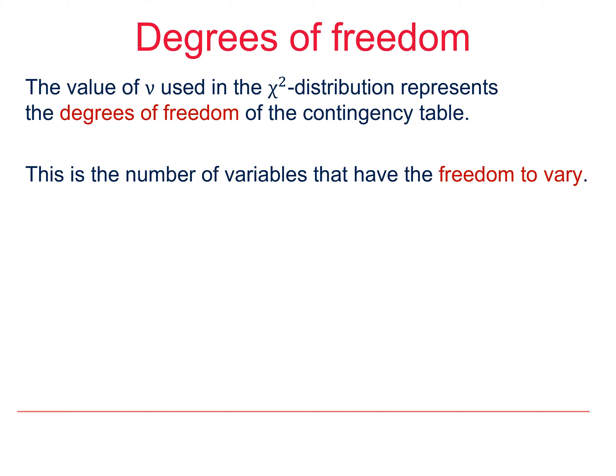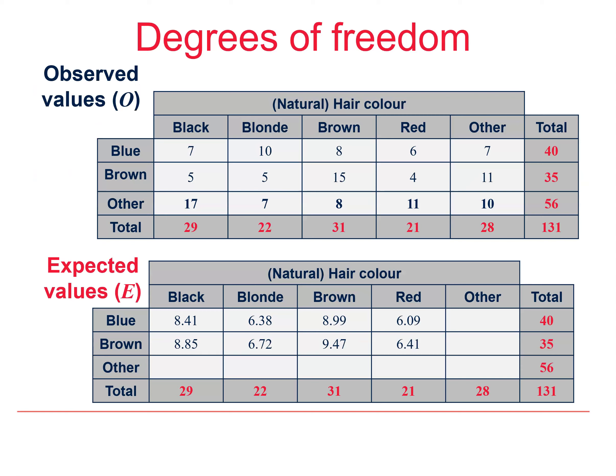It's the number of variables that have the freedom to vary. If you look at our expected values, you can see that we can work out the third row from the column totals. If the column totals are fixed, the third row is not free. Similarly, we can work out the final column from the row totals. Again, it isn't free.